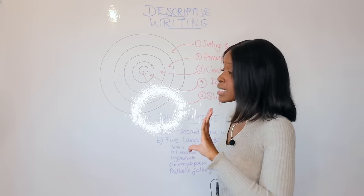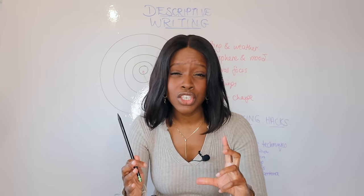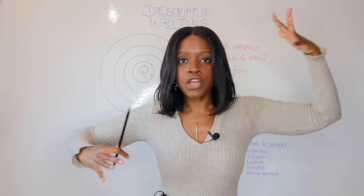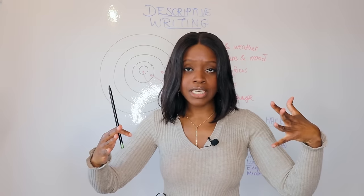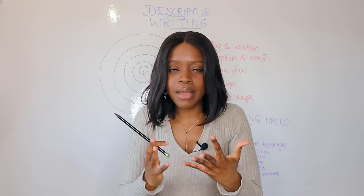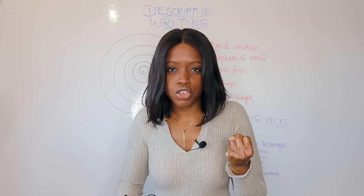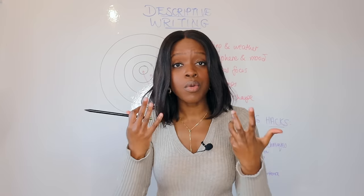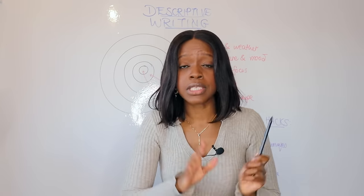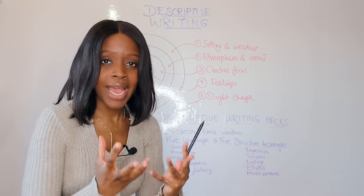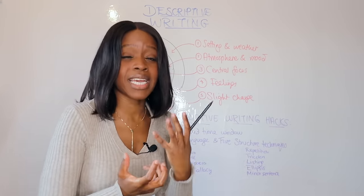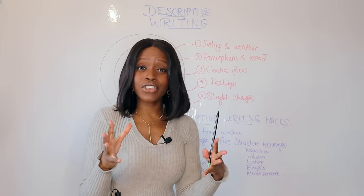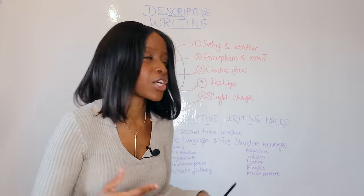I've drawn five different circles. If you've got an image, draw those circles out and think about what's going on in the outermost part — what's around the image, whether it's nighttime or daytime, inside or outside. Then focus a little more inward and think about the atmosphere and mood. Is it dark and ominous, or happy and airy? That's your second paragraph before you go for your central focus in the third.